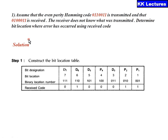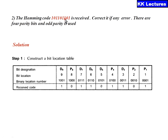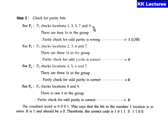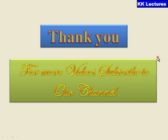Example: The 9-bit odd parity Hamming code 1 0 1 1 0 1 0 1 is received — correct it if there is an error. Checking p1 (positions 1, 3, 5, 7, 9): result = 1 (wrong parity). Checking p2 (positions 2, 3, 6, 7): result = 0 (correct). Checking p4 (positions 4, 5, 6, 7): three ones — odd parity correct — result = 0. Checking p8 (positions 8, 9): one '1' — odd parity correct — result = 0. The binary error word is 0 0 0 1, which equals position 1. So the error is at bit position 1: change the 1 to a 0 to get the corrected code.